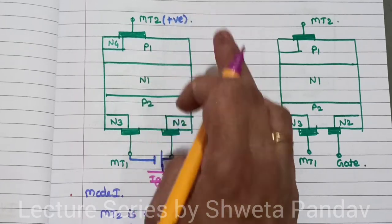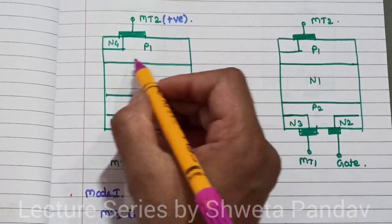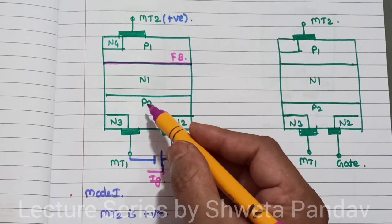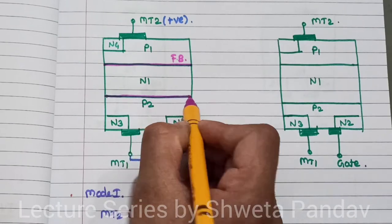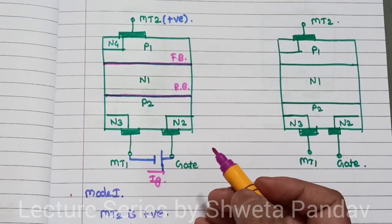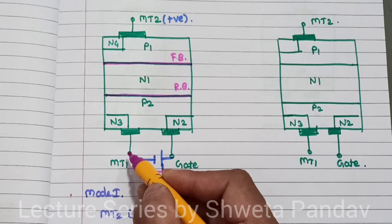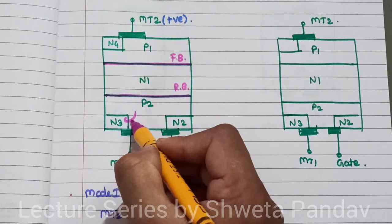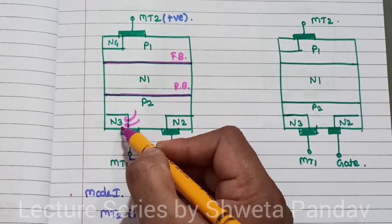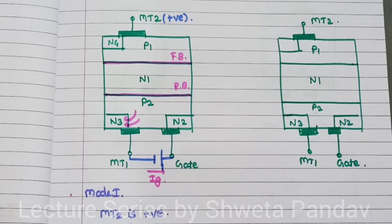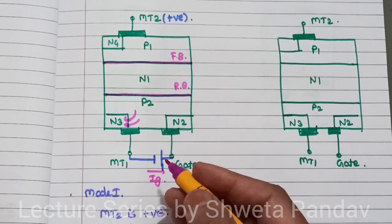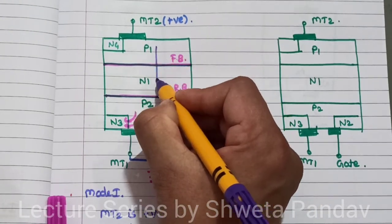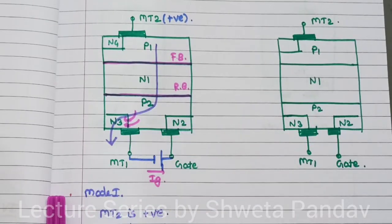As MT2 is positive with respect to MT1, the P1-N1 junction is forward biased. The MT1 terminal is connected to the negative terminal, so the N1-P2 junction is reverse biased. As MT1 is connected to the negative terminal, charge carriers are injected from the P2 to the N3 semiconductor layer, and the current flows through P1, N1, P2, and N3.